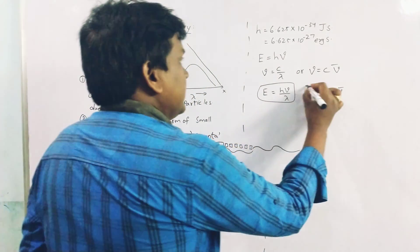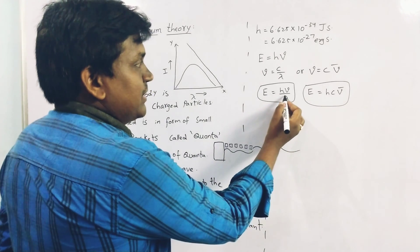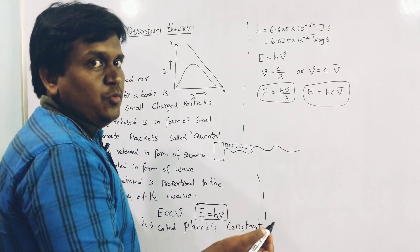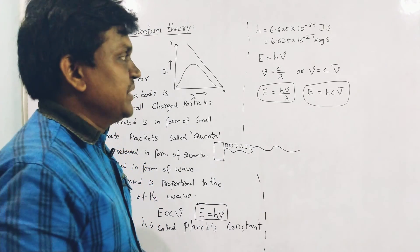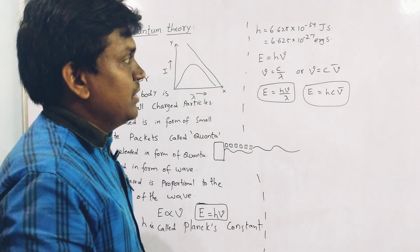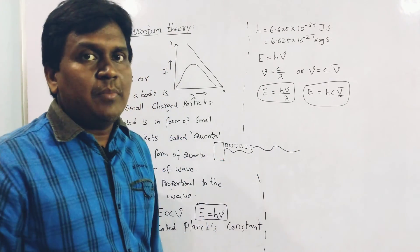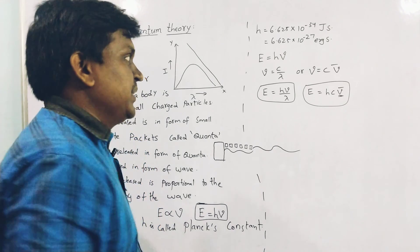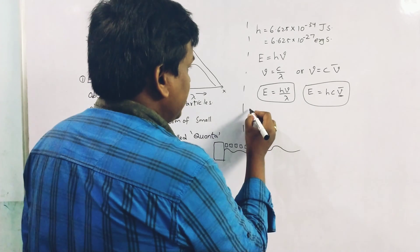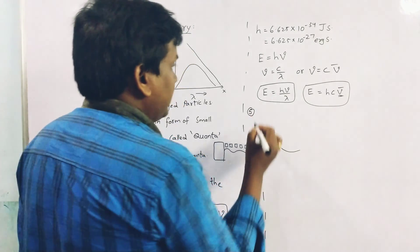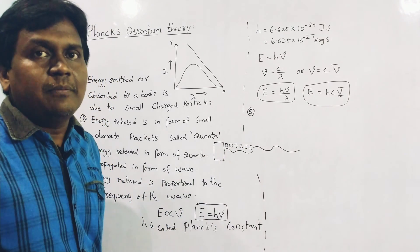So by knowing the wavelength λ we can find the energy of the wave, by knowing the frequency ν we can find the energy, and by knowing the wavenumber ν̃ we can also find the energy of the wave.